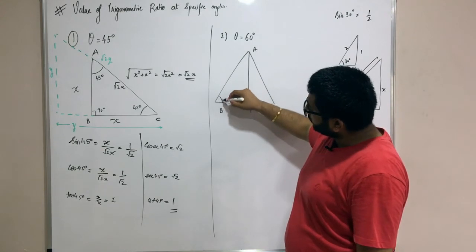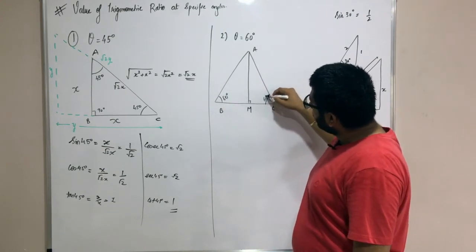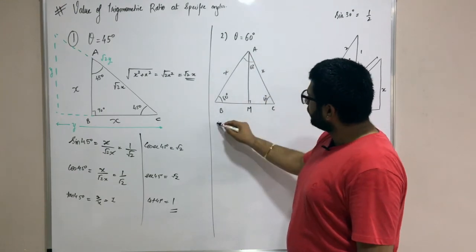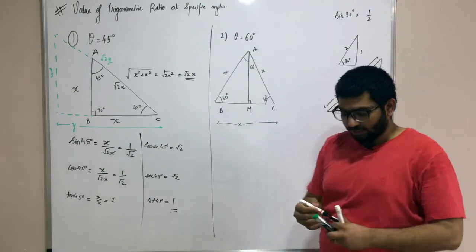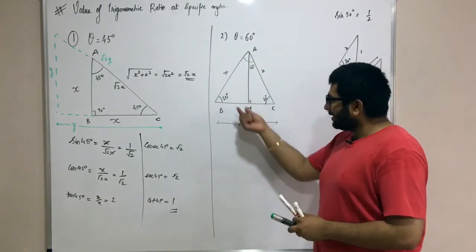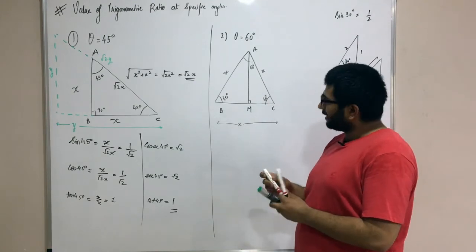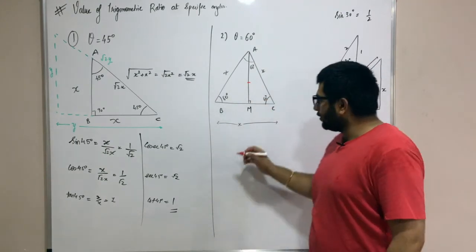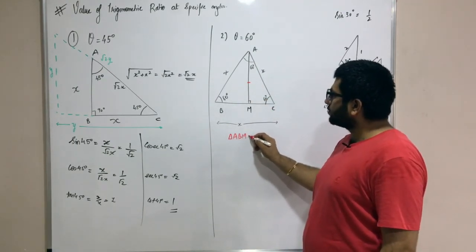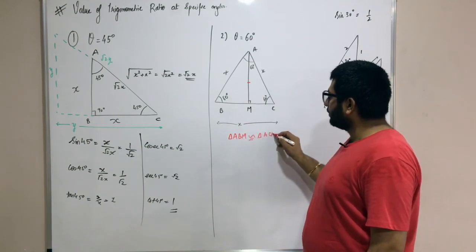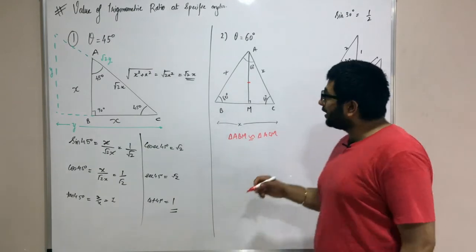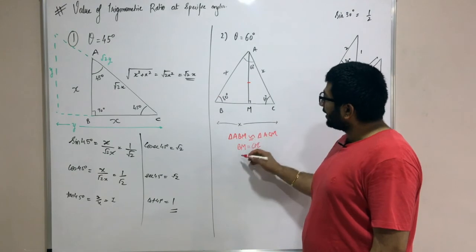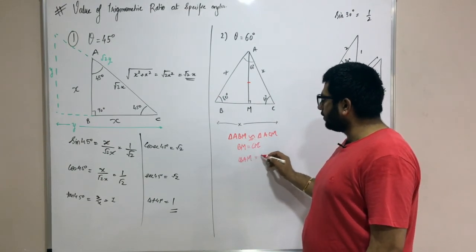This is triangle ABC. AM is the perpendicular. If this is an equilateral triangle, this was 60, this was also 60, and this was also 60. All the sides are equal; let's say the side is x. Now, this is 60, this is 90, this is 90, this is 60, and this is common. So by angle-angle-side, the triangles are congruent. Triangle ABM is congruent to triangle ACM. If ABM and ACM are congruent, then by CPCT, BM will be equal to CM, and angle BAM equals angle CAM. So this was 60, this becomes 30 degrees, and this becomes 30 degrees.